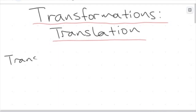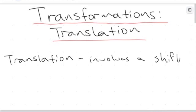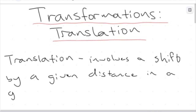A translation is another type of what we call an isometric transformation, where the shape's dimensions, length, and size — everything stays intact. But a translation involves a shift by a given distance in a given direction. So it's really just a shift somewhere — we're just moving an object in some direction.